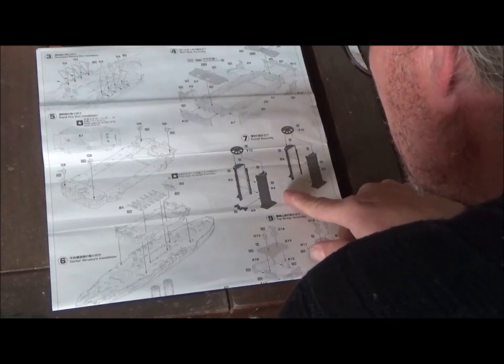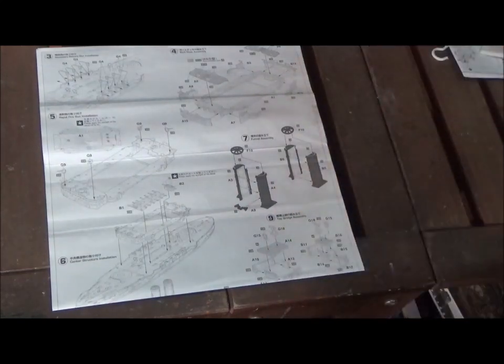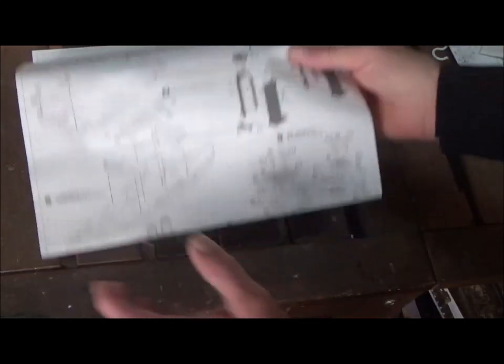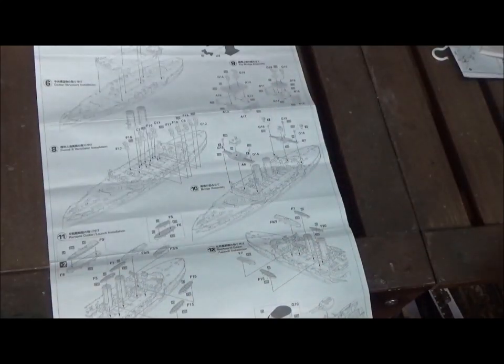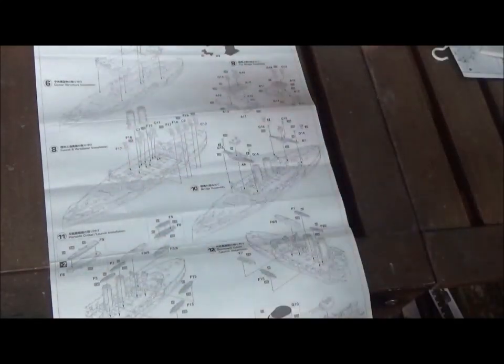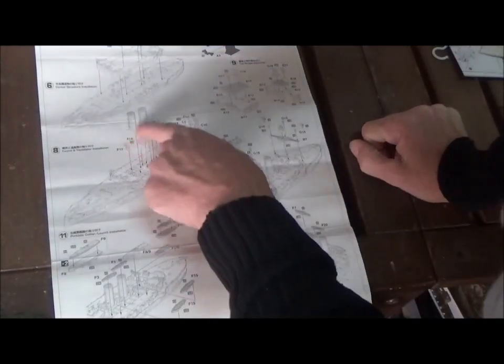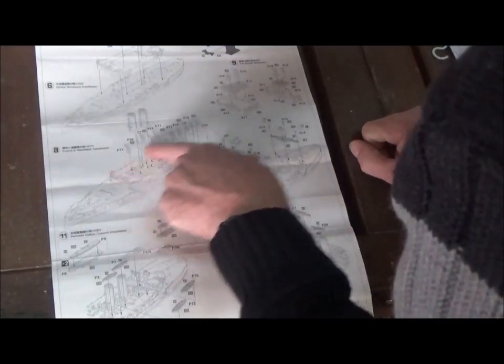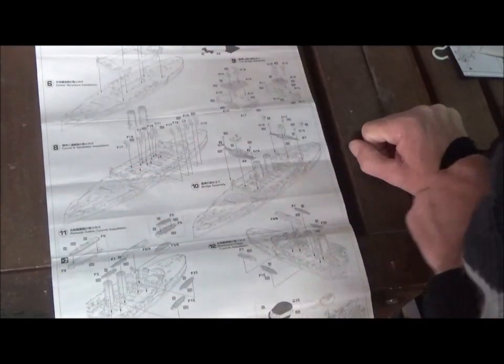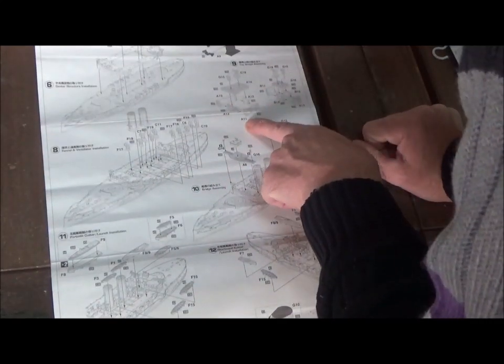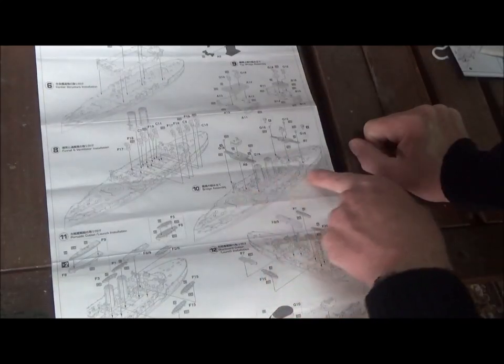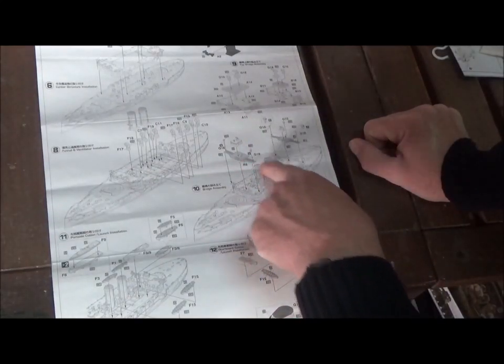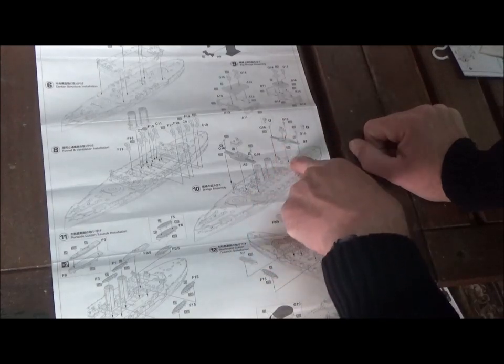Number seven we have the funnels. Number eight is somewhere else down here. They kind of got it all crazy. It's not like straight in line the numbers. So number eight we put the funnels on and these ventilation things in. Number nine we're back up here. We are building some of the parts to the bridge. Number ten we have building the bridge here and the rear one too.